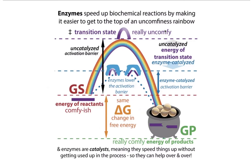Enzymes are going to lower the energy of the transition state — their job is to lower that activation barrier. Remember the leprechaun analogy: there's a pot of gold on the other side of the rainbow, but it has to get up to the top first. Even if it's more thermodynamically favorable to be at the pot of gold, you have to get over the top. So what an enzyme does is lower the height of that rainbow, lower the activation energy, and allow the leprechaun to get to the other side. When you're at the top, you can go either way, so enzymes catalyze the reaction in both directions.